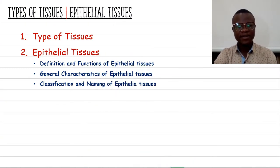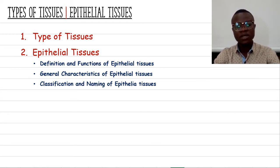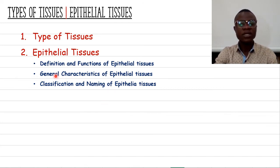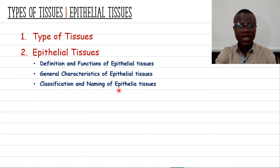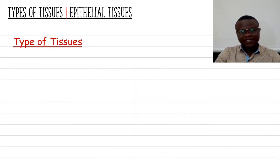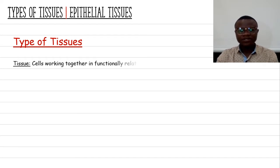Good day and welcome back. Today we are going to look at the types of tissue, specifically the epithelial tissue. In this tutorial, our focus will be on the epithelial tissue — we are going to discuss its function, what it is, its general characteristics, and its classification and naming. Remember, tissue refers to cells working together in functionally related groups.